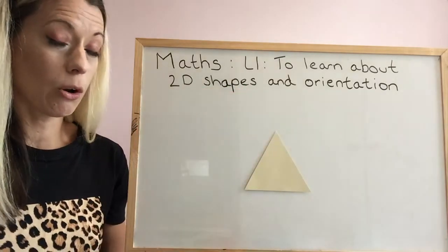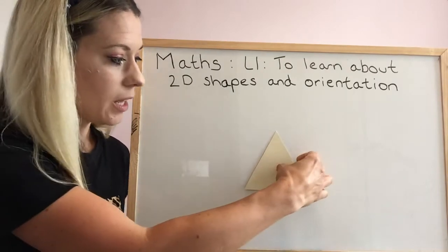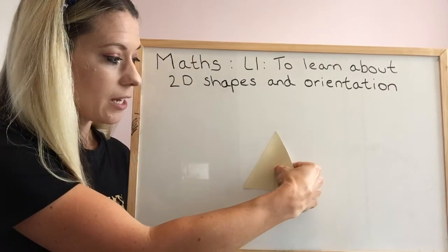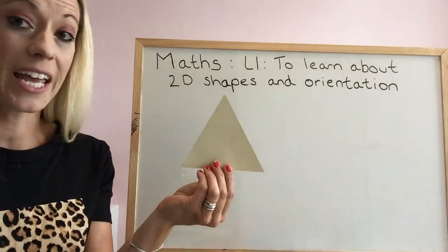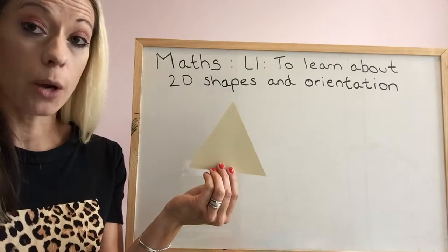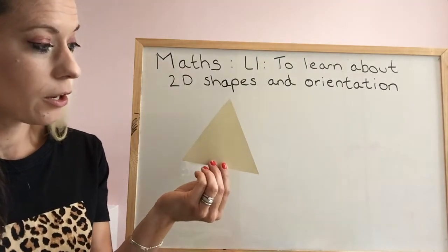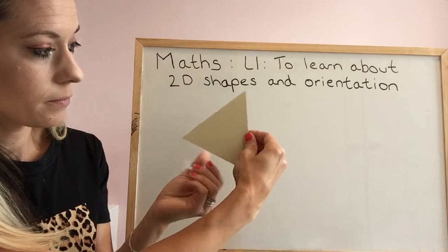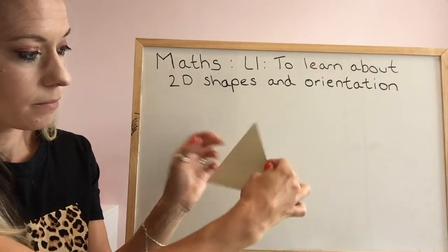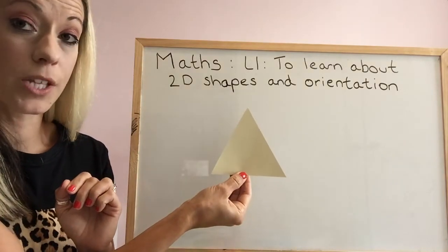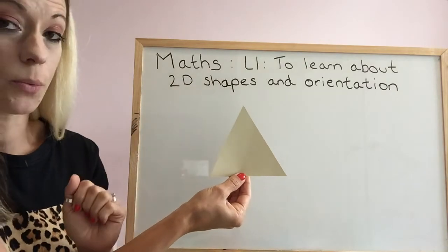So we're going to look at clockwise and anti-clockwise rotation. I've got a triangle here and I'm going to rotate it clockwise and do a whole turn. Let me show you. That was a whole turn — imagine this is the top and it went all the way round in a clockwise way.